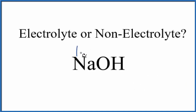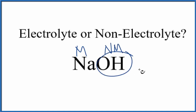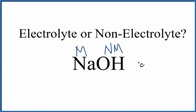So we have a metal here and it's bonded to two non-metals. This is the hydroxide ion — it's actually a polyatomic ion. But we have a metal bonded to non-metals, so this is going to be an ionic compound.